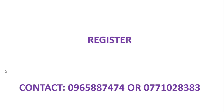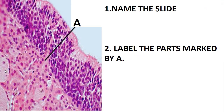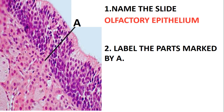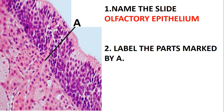Let's quickly move on and look at the next slide. Name the slide. This slide is showing the nasal cavity — specifically we are looking at the olfactory epithelium. Label the parts marked by A.